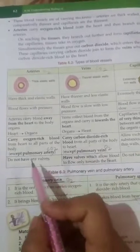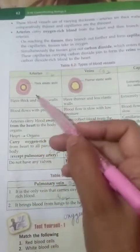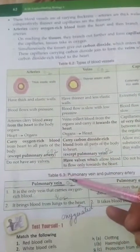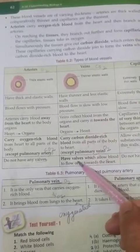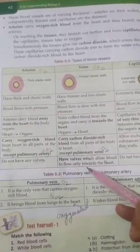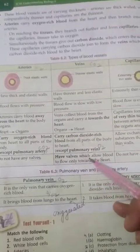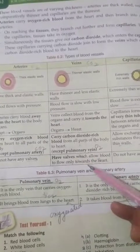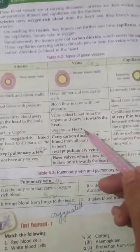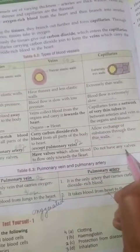Arteries do not have valves — valves act like gates — because blood flows outward from the heart through arteries to different body organs. But veins have valves because these valves prevent the backflow of blood. If veins did not have valves, blood would flow back to the body organs. So the valves ensure that blood reaches the heart and does not return to the organs. Capillaries also do not have valves.